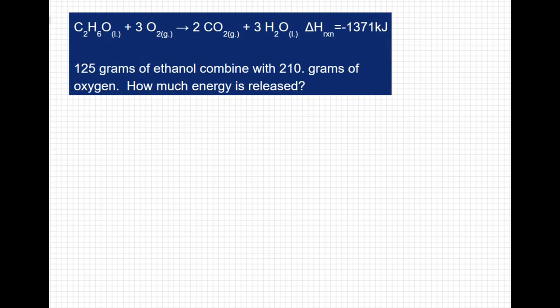In doing stoichiometry, our first step is to balance the equation, which has been done for us. Our second step is to convert to moles. Let's start with 125 grams of ethanol. One mole is equivalent to 46.06 grams.